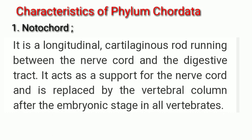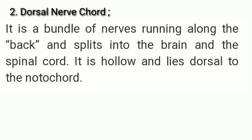The notochord acts as a support for the nerve cord and is replaced by the vertebral column after the embryonic stage in all vertebrates. Next we have the dorsal nerve cord — a bundle of nerves running along the back that splits into the brain and the spinal cord. It is hollow and lies dorsal to the notochord.